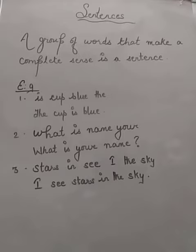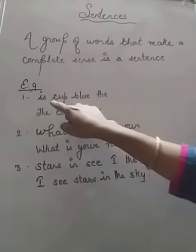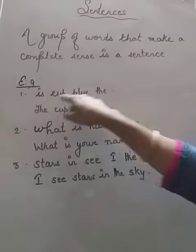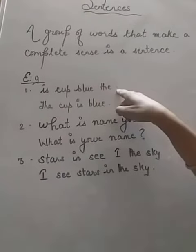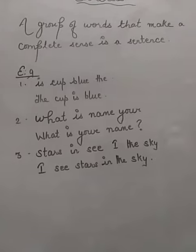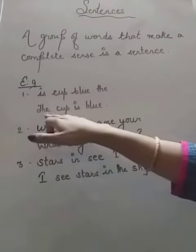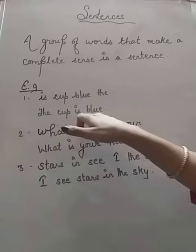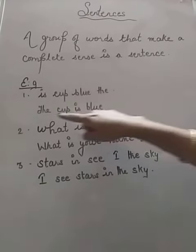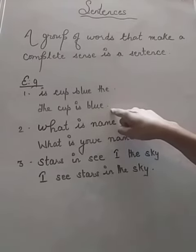Let us see some examples. Number one: 'is cup blue the?' These are four words but they are not making any sense, so we cannot consider them as a sentence. Now, 'The cup is blue.' This is also four words but they are making sense, so this is a sentence.